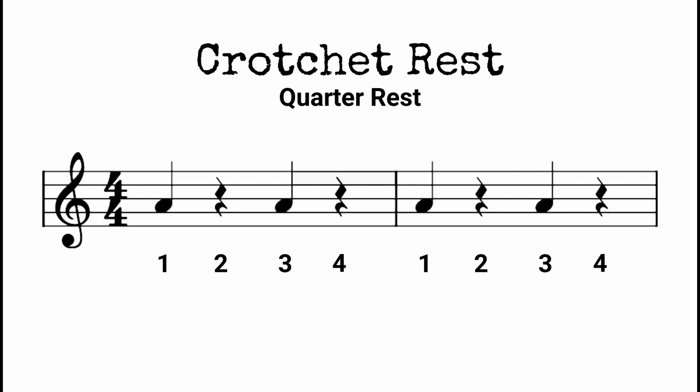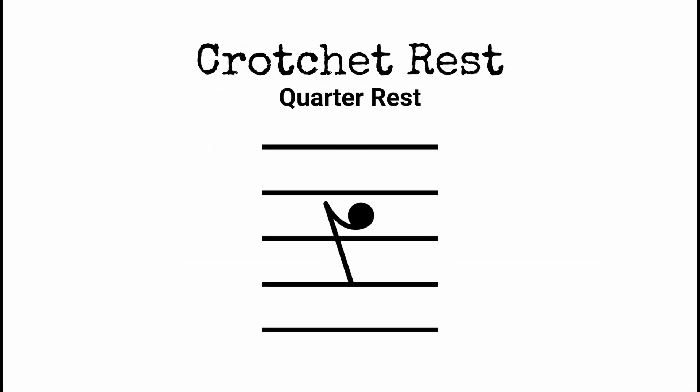A crotchet rest can also be represented by a symbol that looks like a backwards seven. This is less common today but you may still come across it in older music, or anything handwritten — I can't for love nor money draw that squiggle.